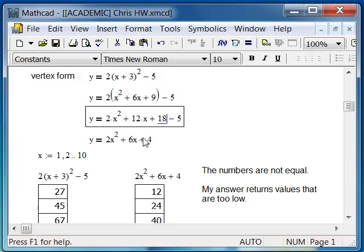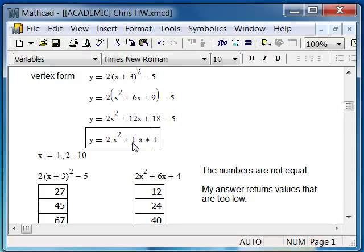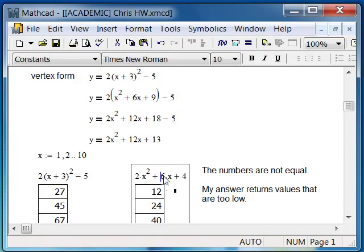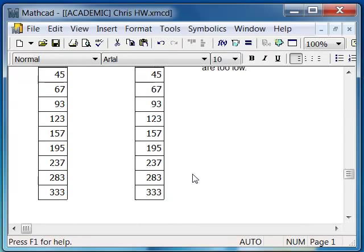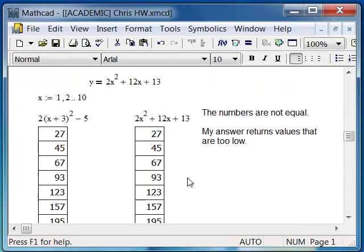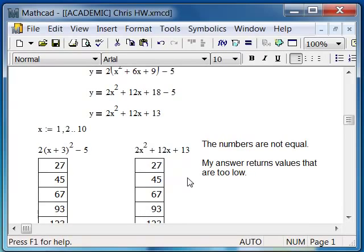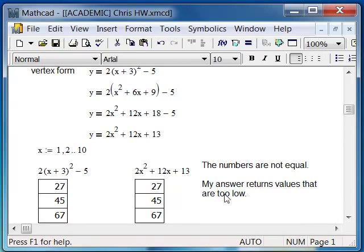Now, I can go back and say 2x squared plus 12x plus 18, which would then give me 2x squared plus 12x plus 13, which I want to change here as so. Now I've fixed the problem, and I know that my answer is correct.